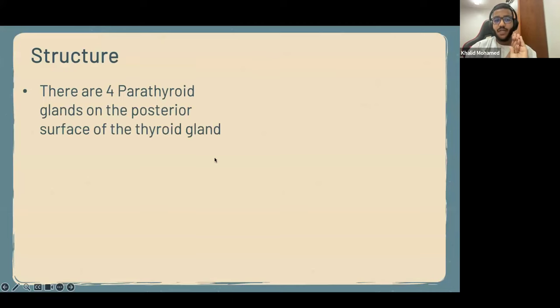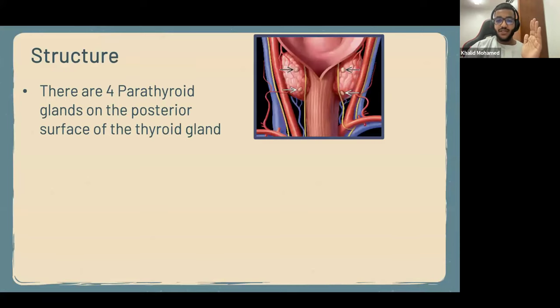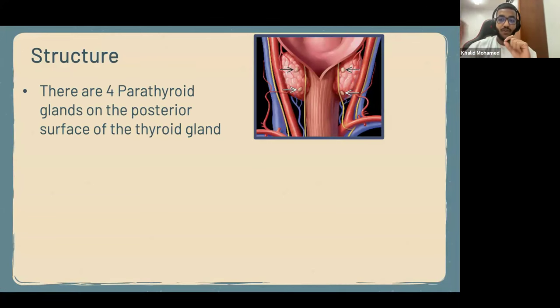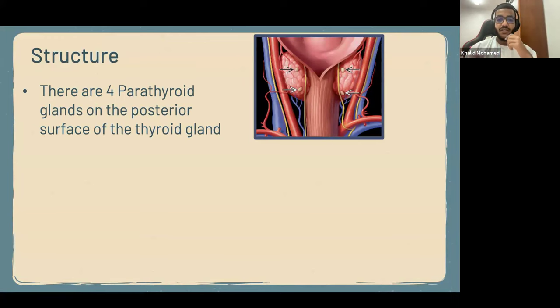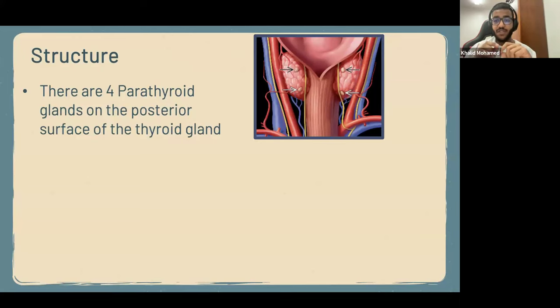Now let's talk about the parathyroid gland. We have four parathyroid glands in the body, and they all lie on the posterior surface of the thyroid gland. In real life, there is no clear boundary between the parathyroid gland and the thyroid gland. That's why one of the most common complications of thyroidectomy — removal of the thyroid gland — is the accidental removal of the parathyroid gland. As soon as the thyroid gland is removed, the doctor has to check calcium levels to make sure the parathyroid gland wasn't removed by mistake.